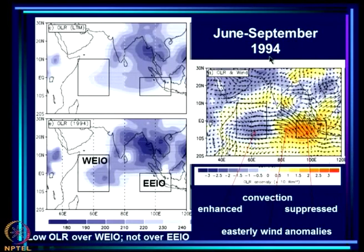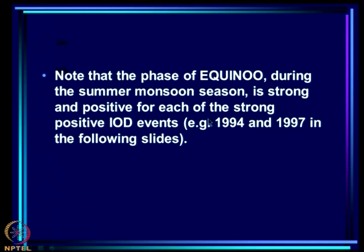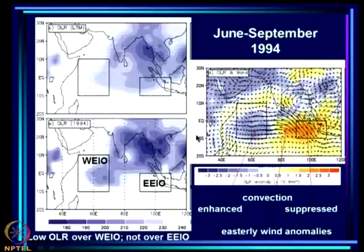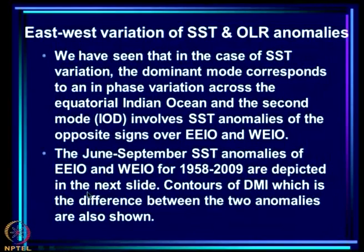In the case of strong positive IOD events, the SST anomalies and OLR anomalies go hand in hand — SST anomalies positive and OLR negative over WEIO, and opposite signs over EEIO. So the atmosphere and ocean seem to behave as if they are tightly coupled. For 1997, it is much colder over the east and much warmer over the west; convection is suppressed over the east and enhanced over the west. For strong positive IOD events during the summer monsoon, you get a very strong positive phase of EQUINOE with very strong winds and a very big gradient.